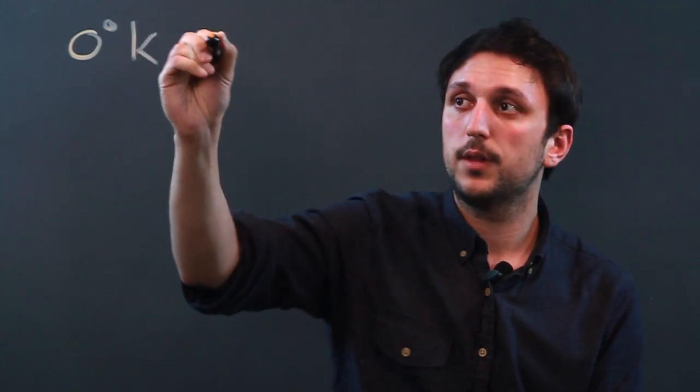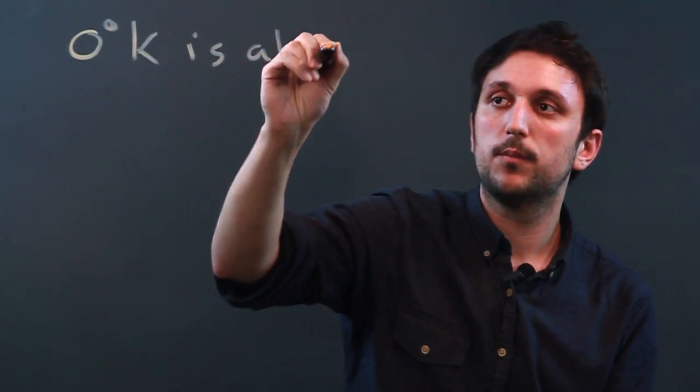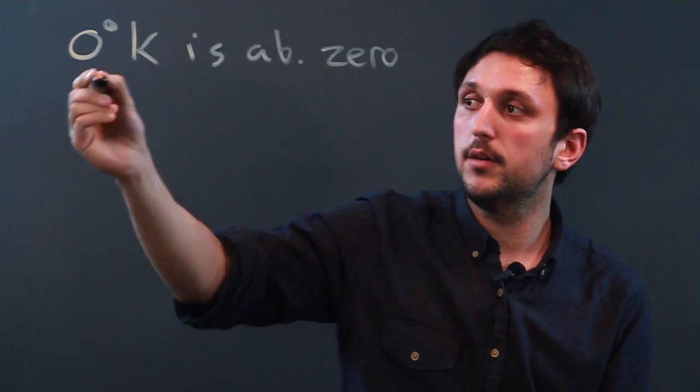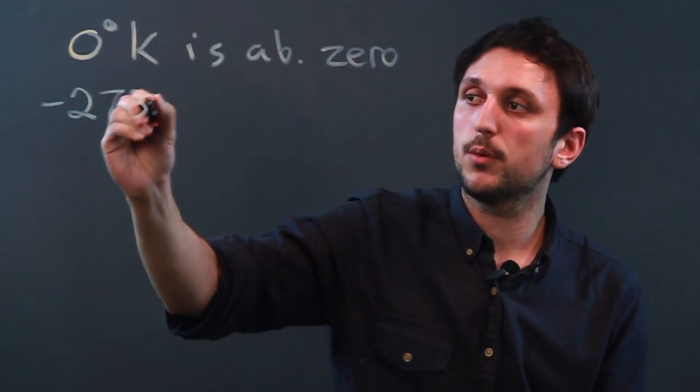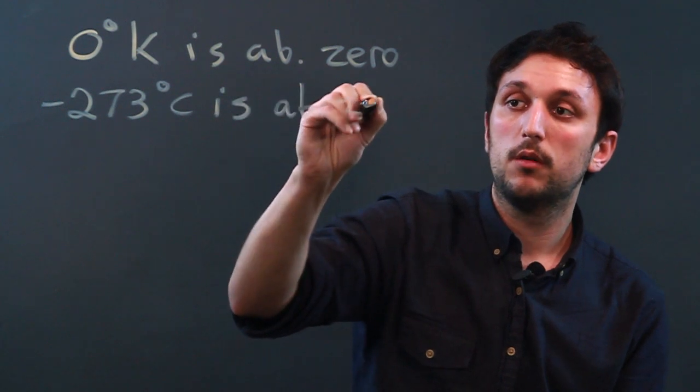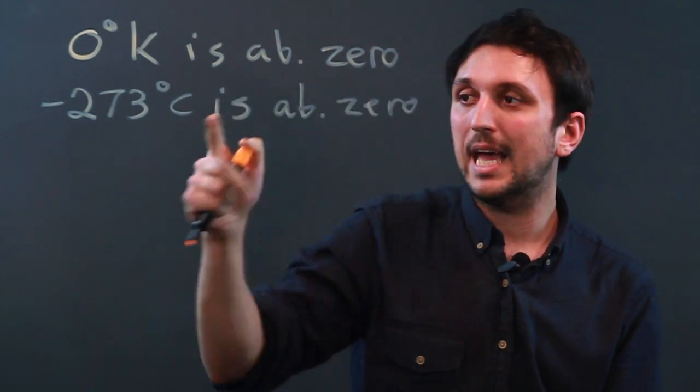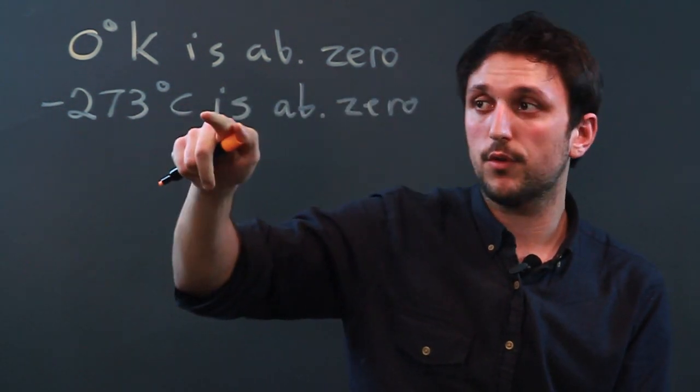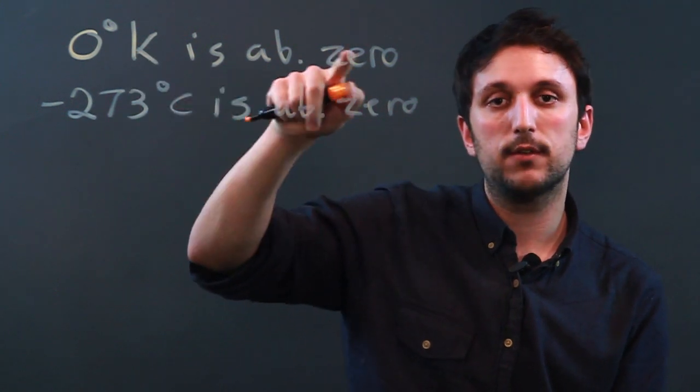So first, let's say zero degrees Kelvin is absolute zero and negative 273 degrees Celsius is absolute zero. That is an important difference because you can have negative values for Celsius. You cannot have negative Kelvin.